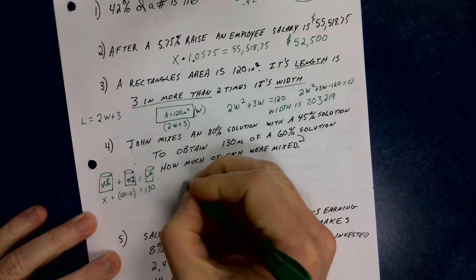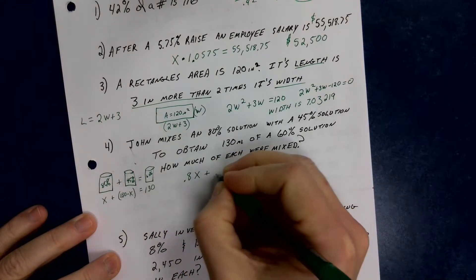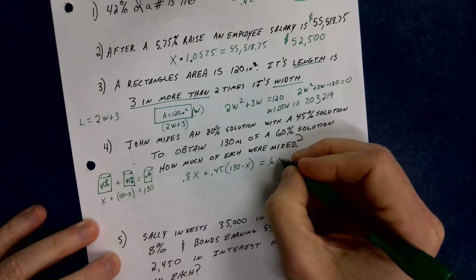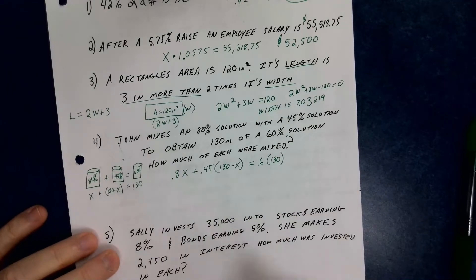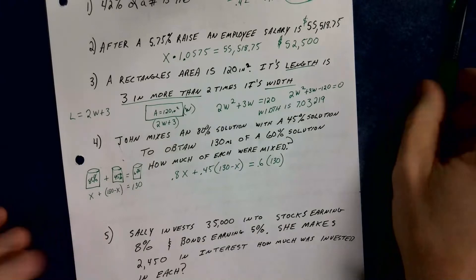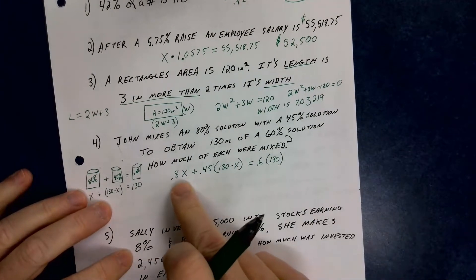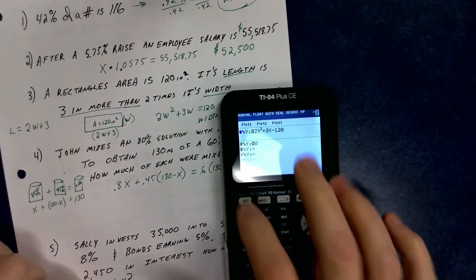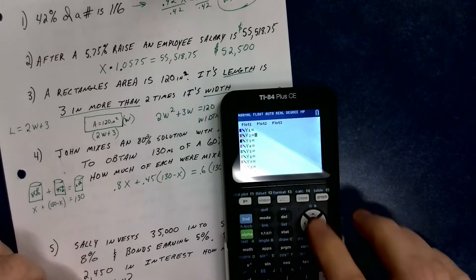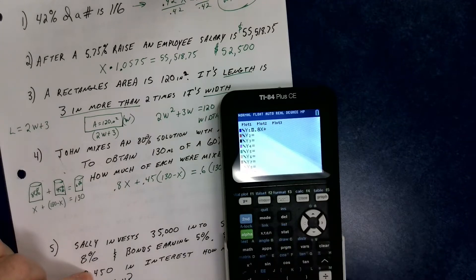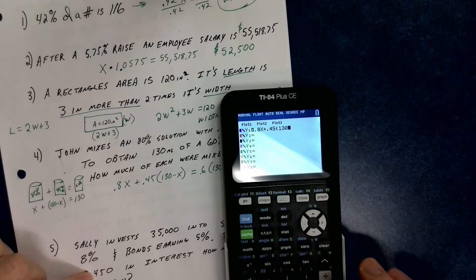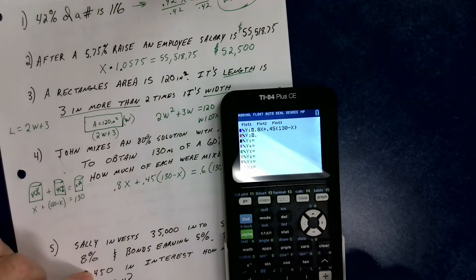I can write the equation: 0.8x + 0.45(130 − x) = 0.6 × 130. This is a linear equation. I can solve it by hand since both x terms are degree one, or I can use the calculator. I go to Y= and enter 0.8x + 0.45(130 − x) for Y1, and 0.6 × 130 for Y2.